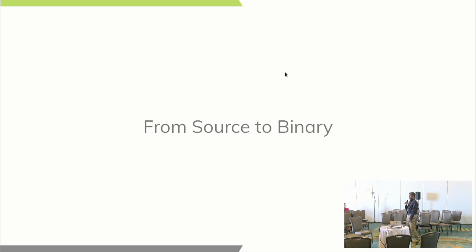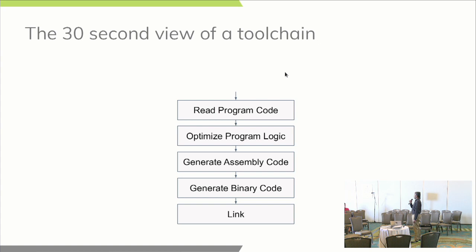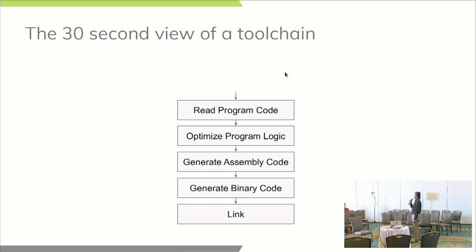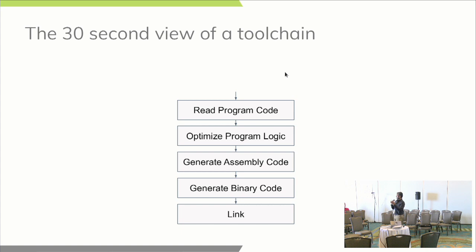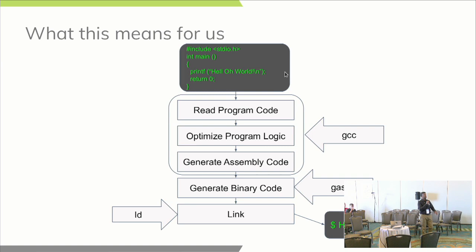So to begin with — from source to binary. This is something most people in this audience will be familiar with: what a compiler toolchain does. It reads program code, tries to optimize the logic to do as few operations as possible, generates assembly code, which is then built into binary object code, and then linked into the final binary.